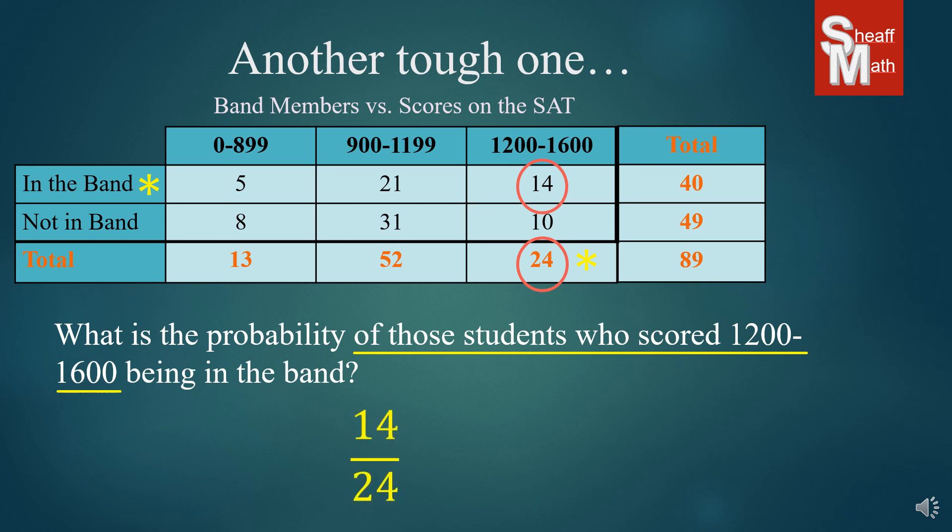It's a 14 out of 24 probability, which simplifies to 7 over 12. That being our final answer. So it's just a little example of one you might come across in a more advanced type of situation.